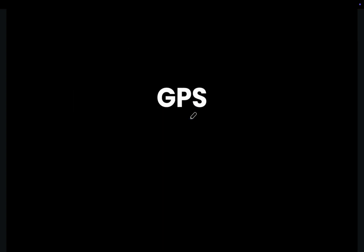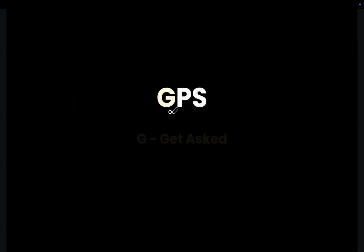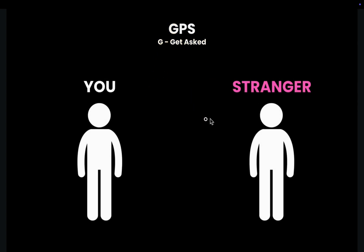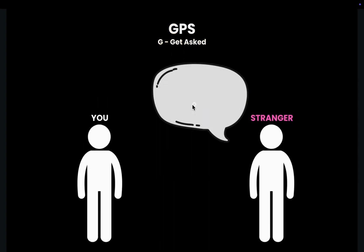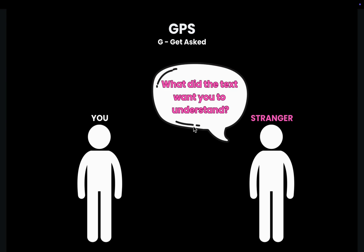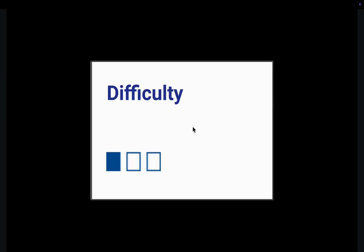The way we can solve these questions is using the GPS method. The G stands for Get Asked. When you're reading the text, imagine that as you read each line, a stranger asks you, what did the text want you to understand? That's exactly how you should go about it. Let me show you what I mean with this first and easy example.